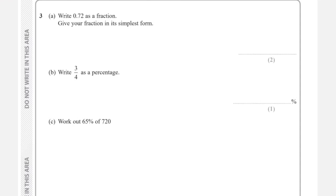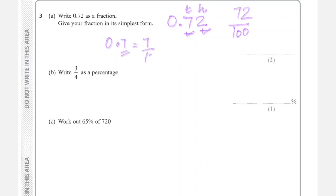Write 0.72 as a fraction in its simplest form. Because we have two decimal places — tenths and hundredths — 0.72 is 72 hundredths, written as 72 over 100. We simplify by dividing by 4: 72 ÷ 4 = 18, 100 ÷ 4 = 25. The simplified answer is 18 over 25.